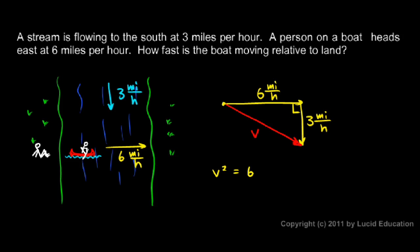V squared will be 6 squared plus 3 squared. 6 squared is 36. 3 squared is 9. If I add 36 and 9, I get 45. So, V squared is equal to 45. So, V will be the square root of 45. And I do that on the calculator, and it comes out to about 6.7, and that's in miles per hour.